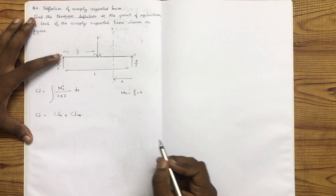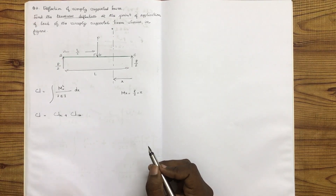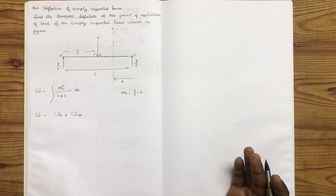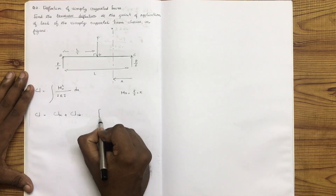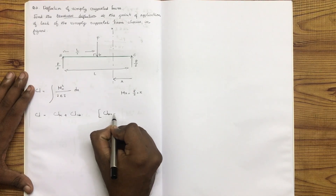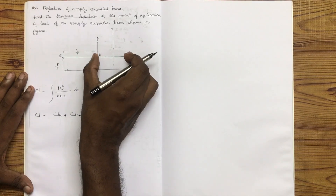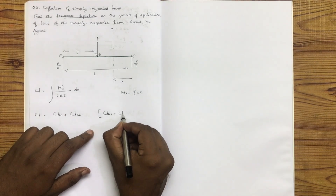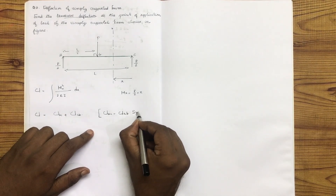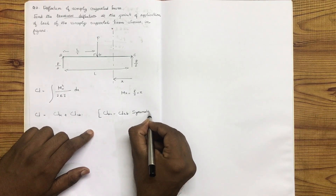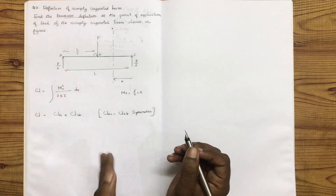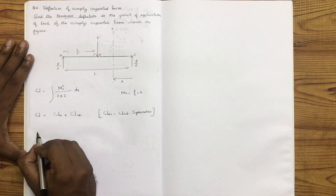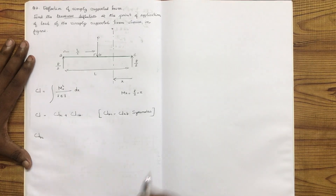If we write the relative equation, it will be equal. There are no variations because the structure is symmetric. It is symmetric about the midpoint, so both halves are equal. This is the Unit Load condition, UBC.